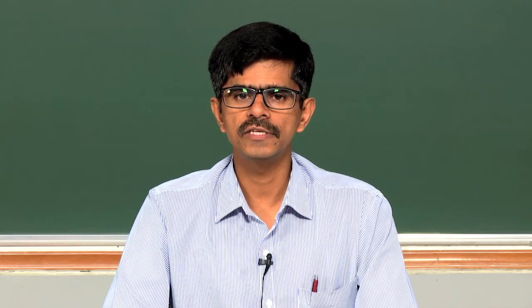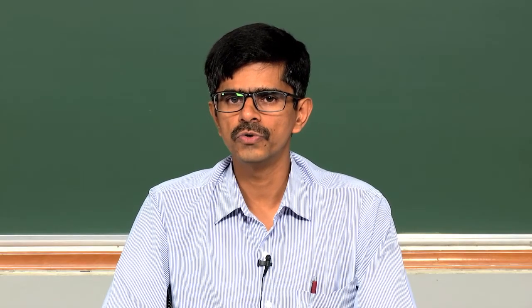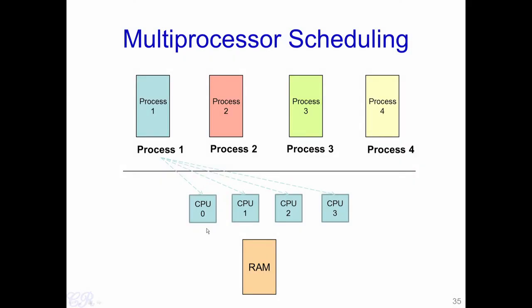Hello. So far we have seen how scheduling algorithms are designed for a single CPU, where the scheduling algorithm would choose a process to execute for the CPU. In this particular video, we will look at multiprocessor scheduling algorithms — essentially how a scheduling algorithm could schedule processes into various CPUs when we have multiple processors in the system.